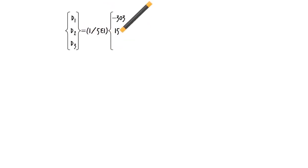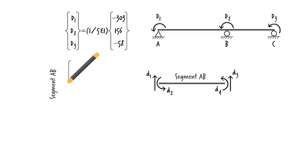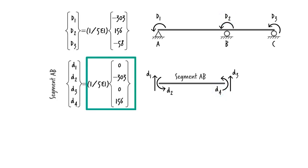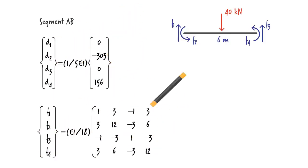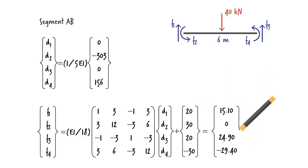Now, all we have to do is to substitute these values in the member equations to get the member end forces. First, let's write the member end displacement vectors. For segment AB, we know the vertical displacements are zero. The rotation at the left end of the segment equals D1, and the right end of the segment rotates by D2. Thus, the displacement vector can be written like this. Substituting the vector here gives us these member end forces.